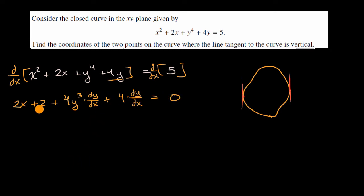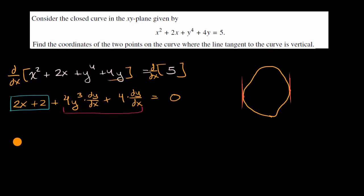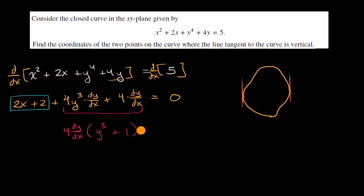Now we just have to solve for dy/dx. We could take the two x plus two and subtract it from both sides, and also factor out four dy/dx. So we subtract two x plus two from both sides and factor out the four dy/dx, getting four times dy/dx times y to the third plus one is equal to negative two times x plus one.